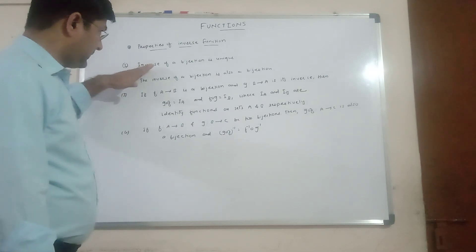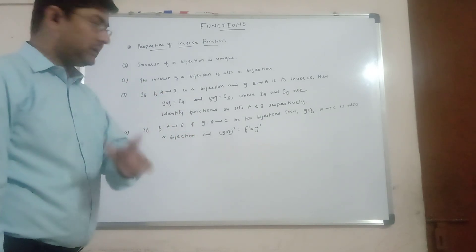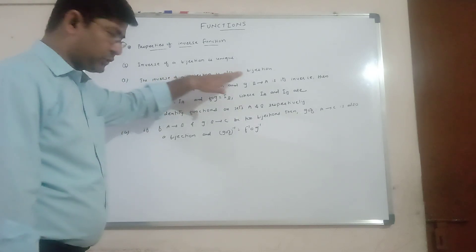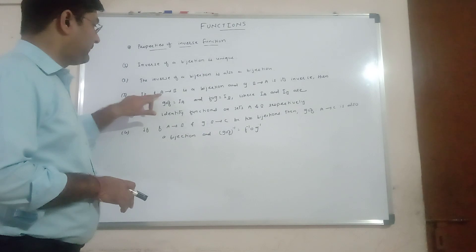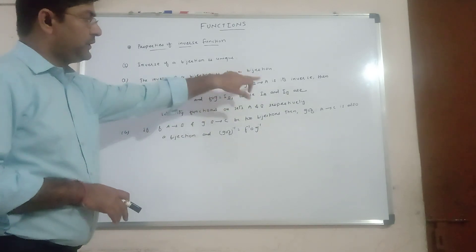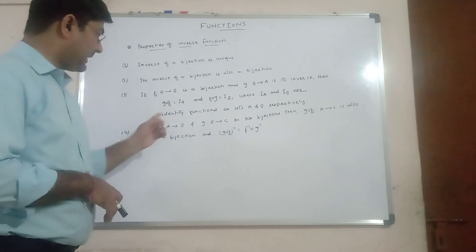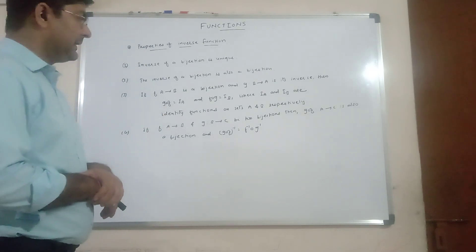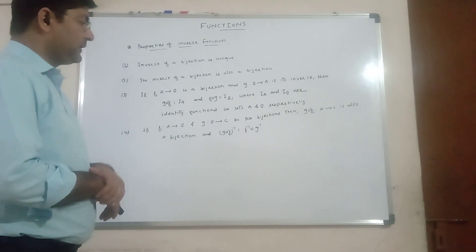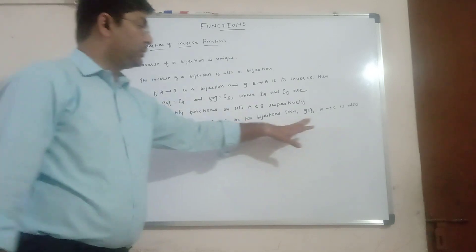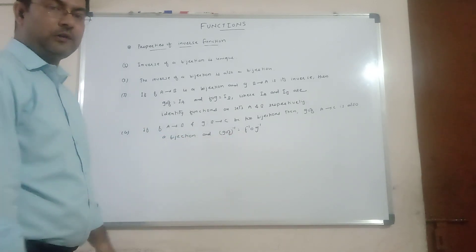To summarize: the inverse of a bijective function is unique — it has one and only one inverse. The inverse of a bijection is also a bijection. If f from A to B is bijective and g from B to A is its inverse, then g∘f = I_A and f∘g = I_B, where I_A and I_B are the identity functions on A and B. If f from A to B and g from B to C are bijections, then (g∘f)⁻¹ = f⁻¹ ∘ g⁻¹.